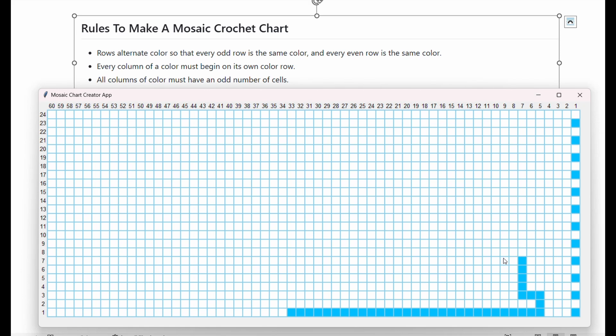We could make a larger white column by going like this. And you can see this is one, two, three, four, five. So it's odd. So that fits the rule.